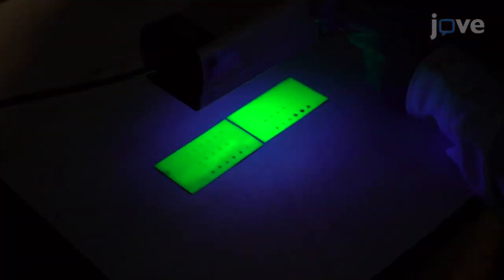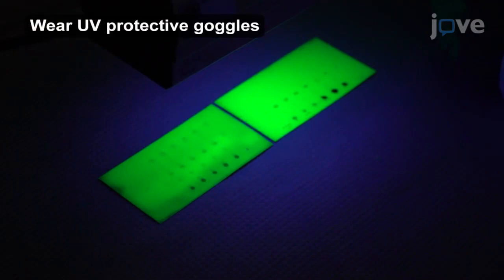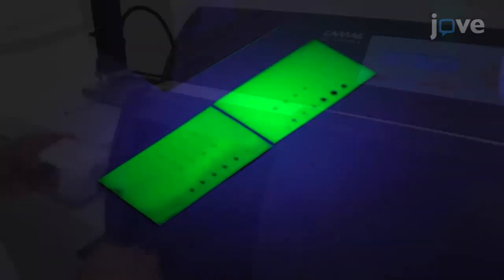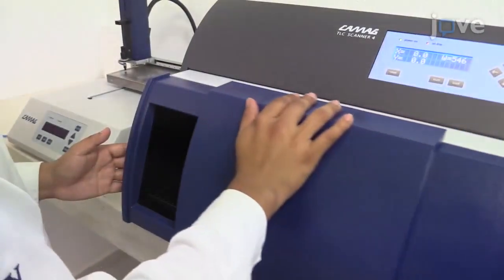Visualize the caffeine bands in short wavelength ultraviolet with a compact UV lamp. After this, quantify caffeine levels by densitometry at 273 nanometers.